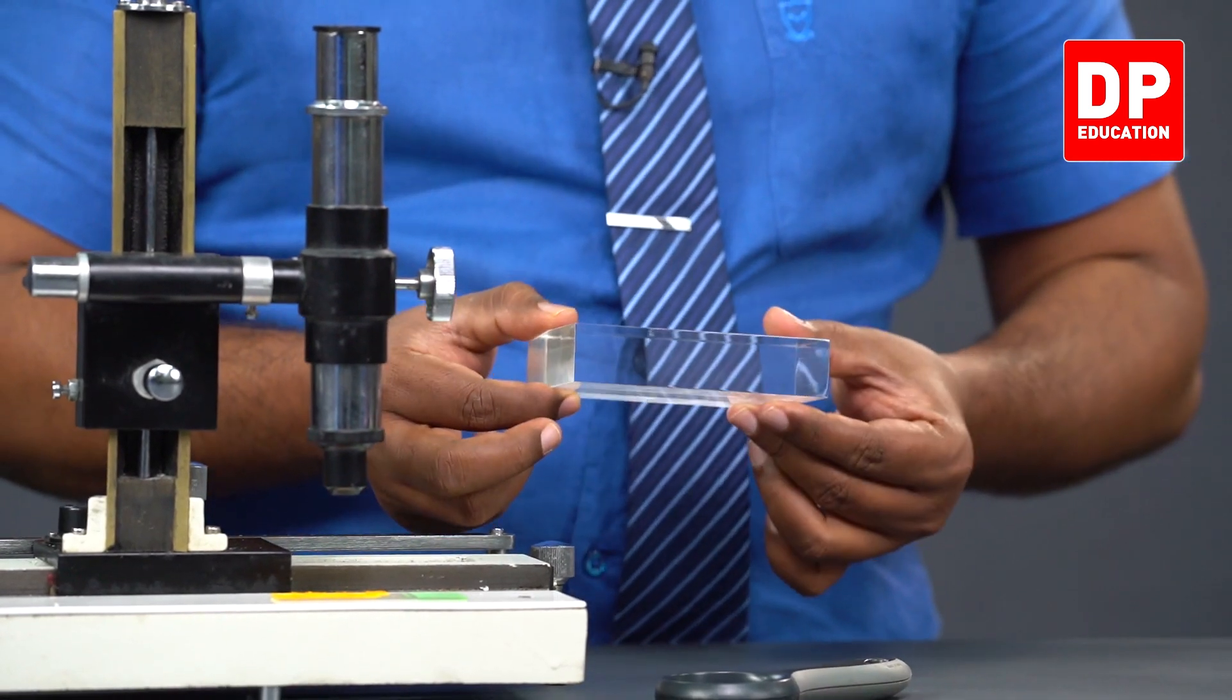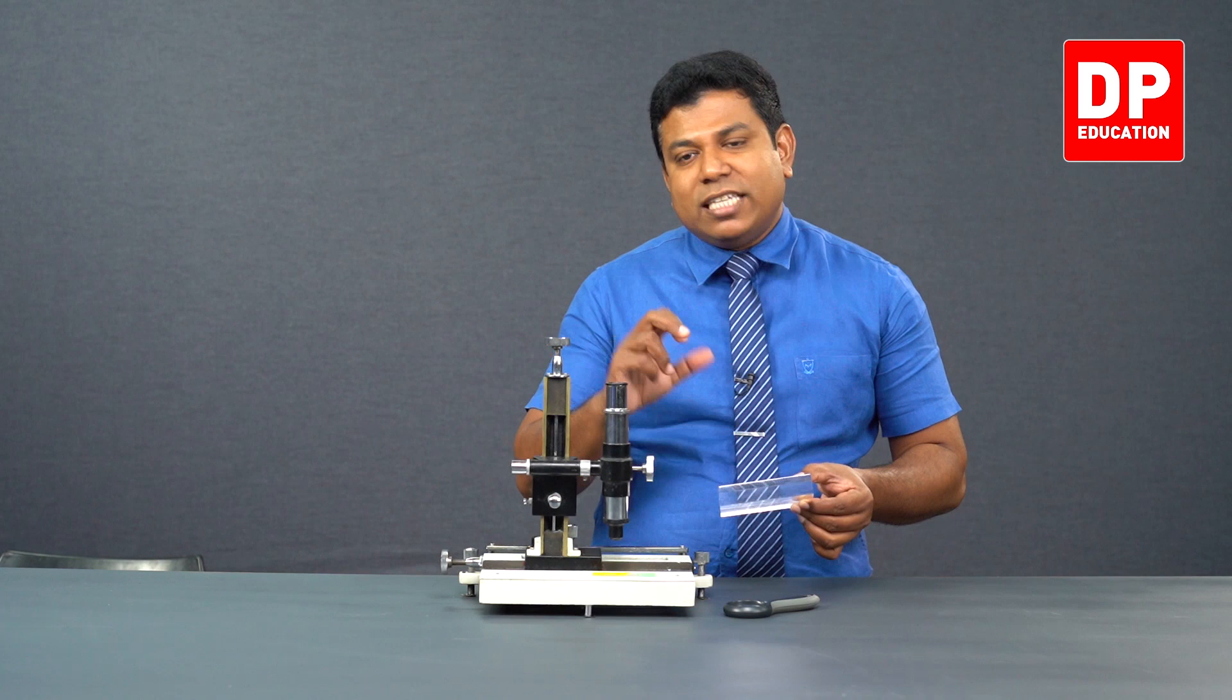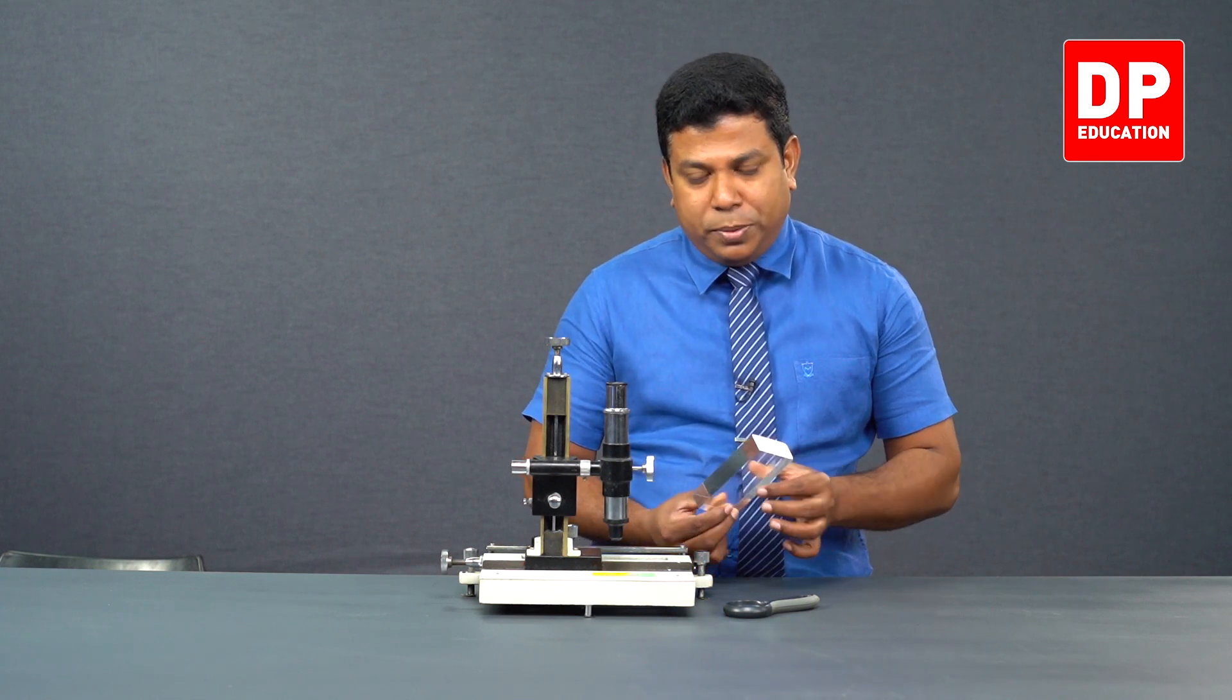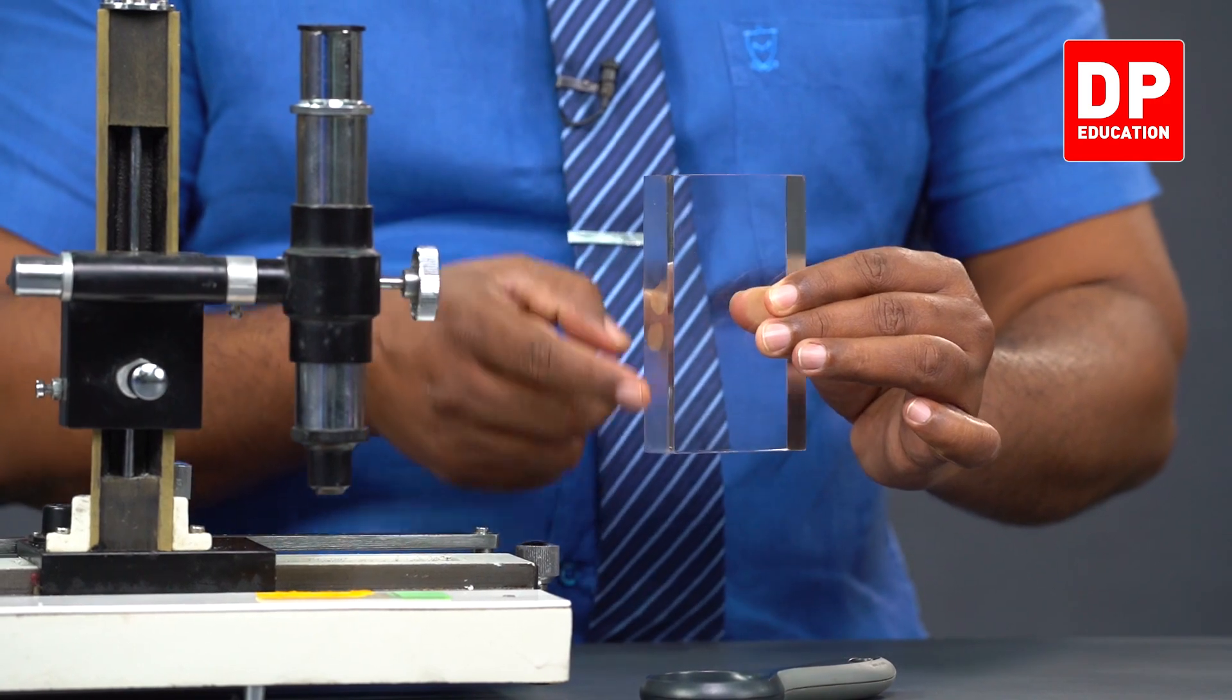In order to minimize the error, I should keep the glass blocks such that the thickness is maximized. So one option I have is I can keep it like this so that this entire length becomes the thickness.